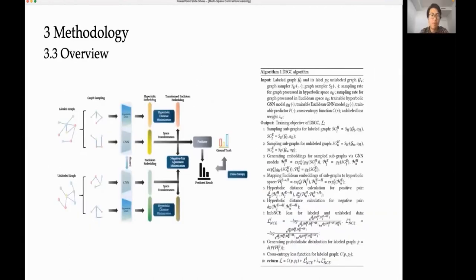This is an overview of the proposed method. DSGC first adopts two different graph samplers to sample subgraphs for the two different spaces on all graphs. Then the generated subgraphs will be fed into different graph encoders and proceed in different spaces. After obtaining embeddings of all graphs, we conduct graph contrastive learning, which maximizes the similarity between the Euclidean embedding and the hyperbolic embedding of the same graph and minimizes the similarity between hyperbolic embeddings of different graphs. The embeddings of labeled graphs will be fed into a downstream predictor to predict labels, and the cross-entropy loss function will be utilized to update the model.